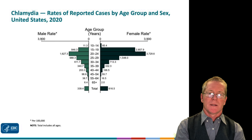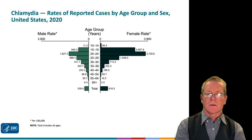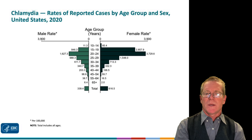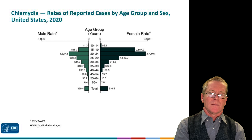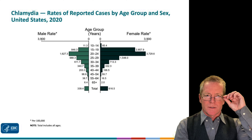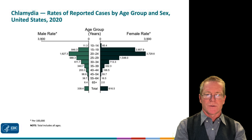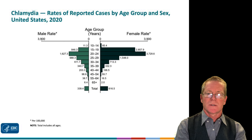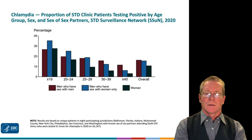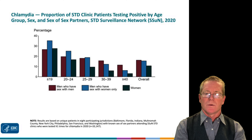Let's take a look at chlamydia. This graph shows the rates of chlamydia in males and females at different ages. You can see that the peak age group is 20 to 24, making this a high concern for college-age students. Chlamydia is highest in men who have sex with women only.